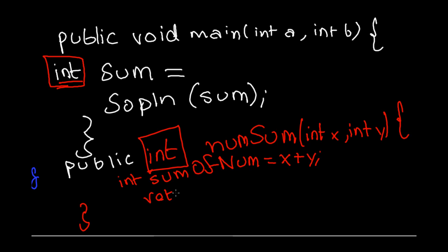And we write here return sum of num. So how do I access this num sum function from, let's say, my main function? Well, it's pretty simple. You just write int sum equals num sum. You write the name of the function and the variables you want to pass to it. You can write a, b. Now let's say you want to know the sum of four and five. If you pass in here four and five, these are the arguments.